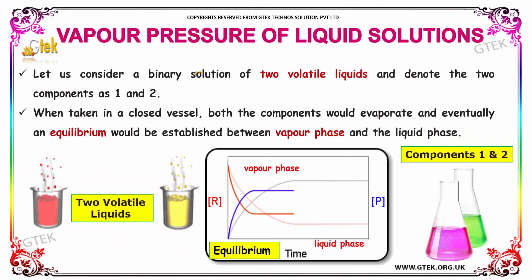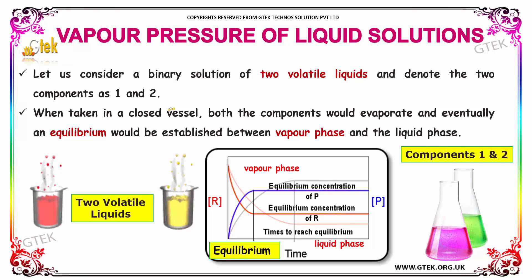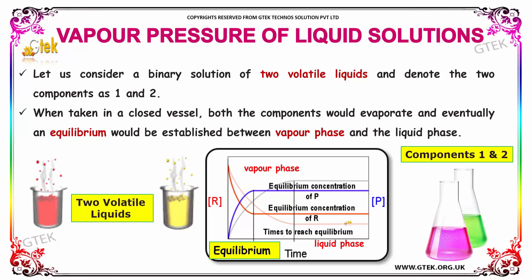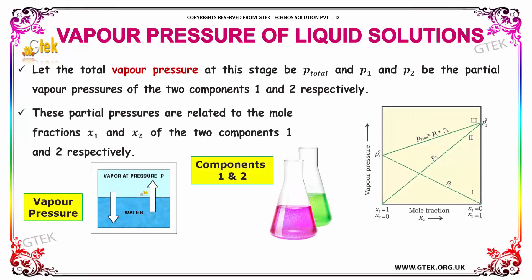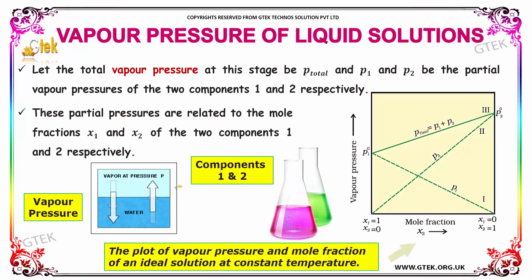Let's consider the binary solution of two volatile liquids and denote the two components as 1 and 2. When taken in a closed vessel, both components would evaporate and eventually an equilibrium would be established between the vapor phase and the liquid phase. Let the total vapor pressure at this stage be P_total, and P1 and P2 be the partial vapor pressures of components 1 and 2 respectively.